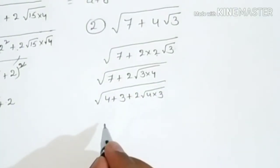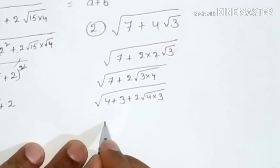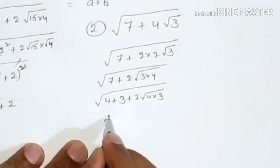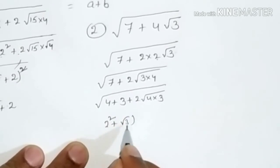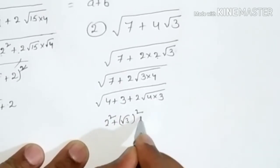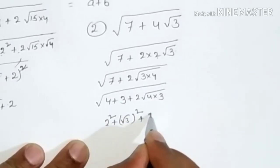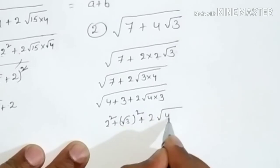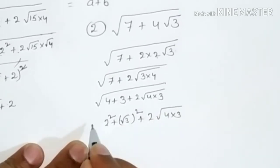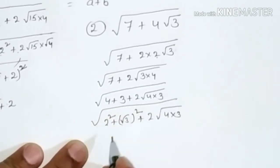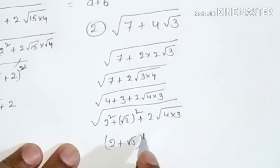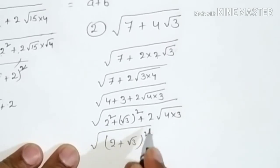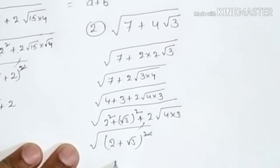So 7 + 4√3 = 4 + 3 + 2·√4·√3, which can be written as (2)² + (√3)² + 2·2·√3. This equals (2 + √3) whole square. The square and root get cancelled, giving 2 + √3.